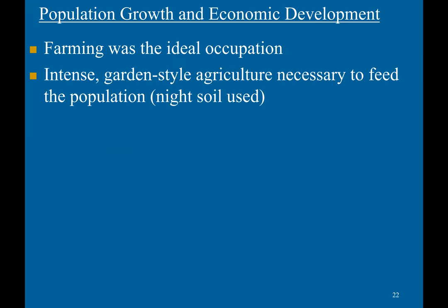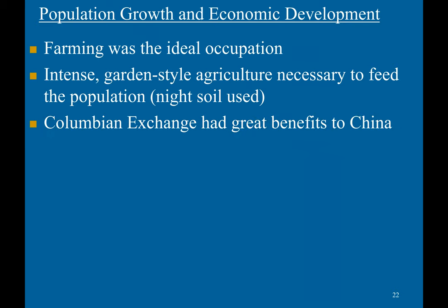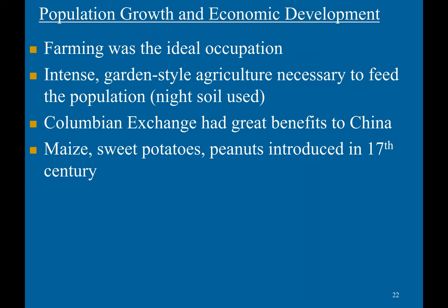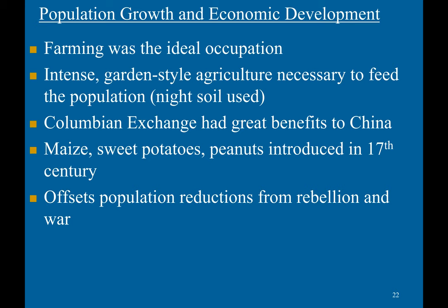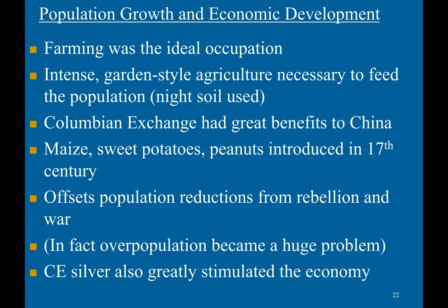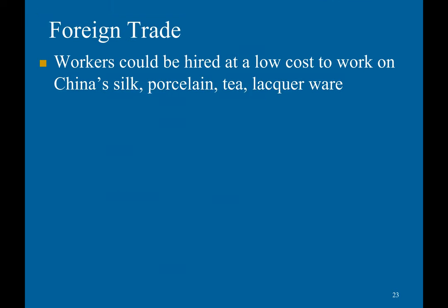Farming was the ideal occupation. Intensive, garden-style agriculture was necessary to feed the population. They also used night soil — basically human feces. The Columbian Exchange had great benefits for China, with maize, sweet potatoes, and peanuts introduced in the 17th century, offsetting population reductions from rebellion and war. In fact, overpopulation became a huge problem. The silver from the New World also greatly stimulated the economy.